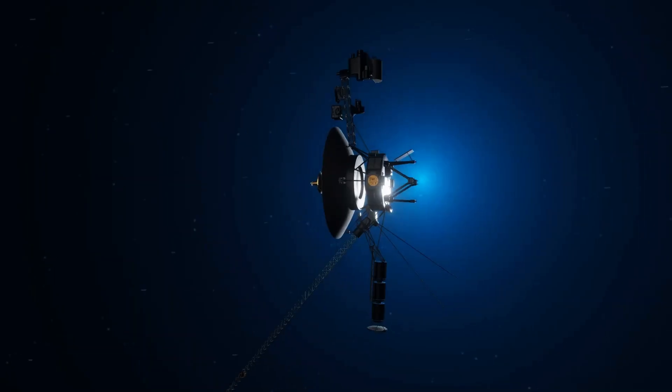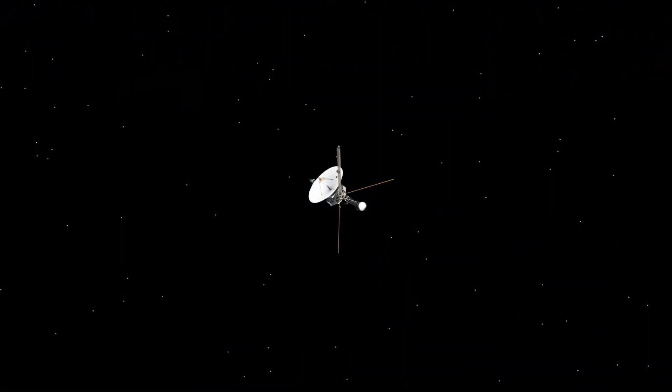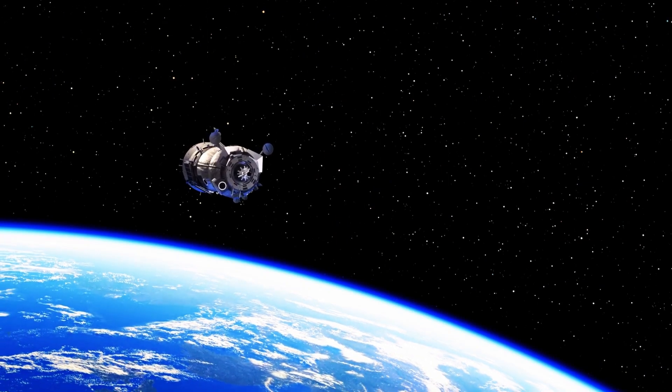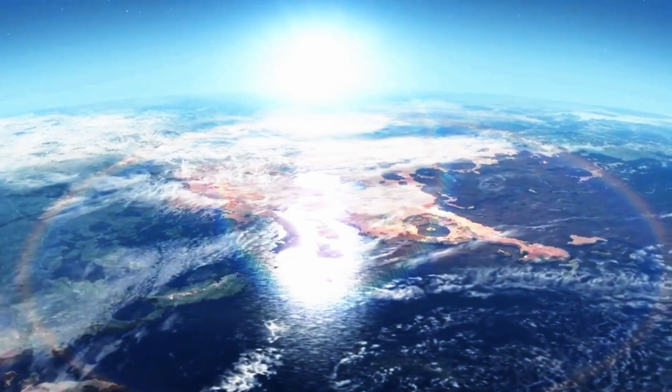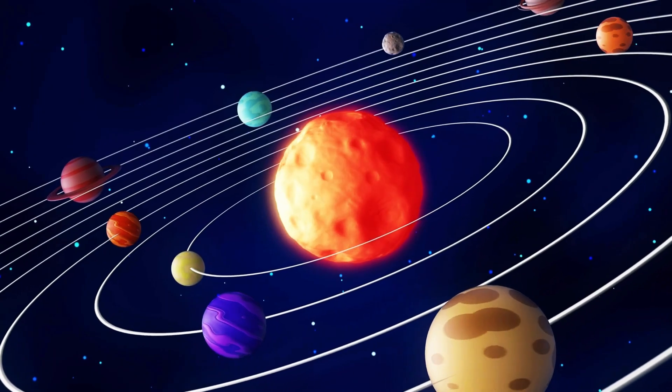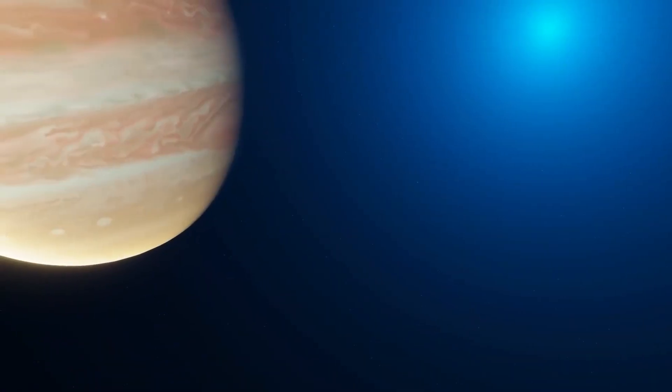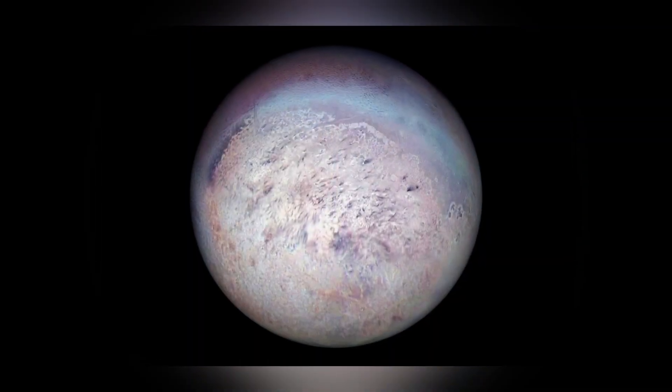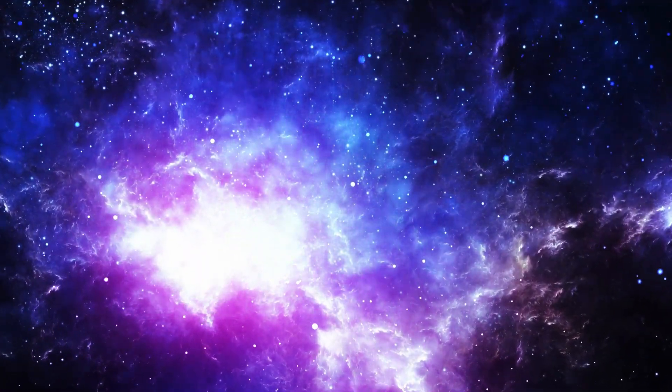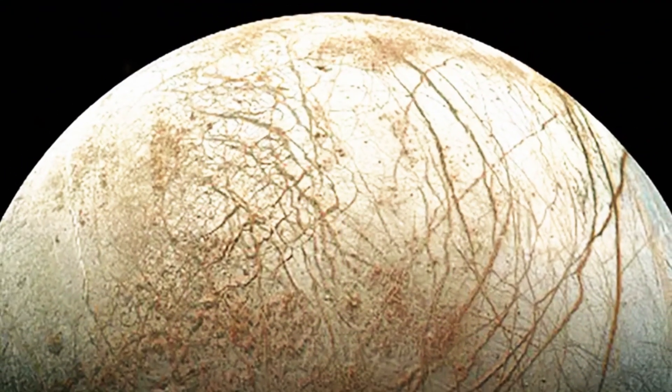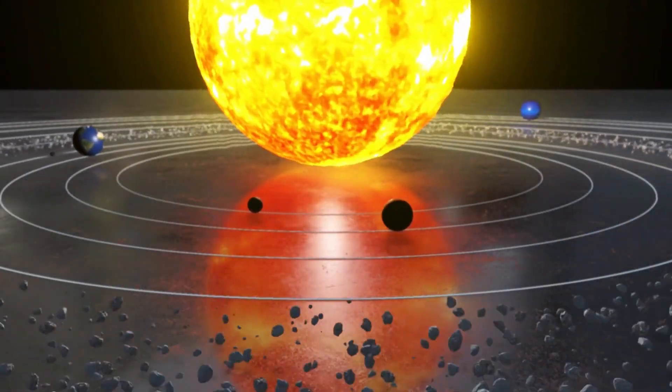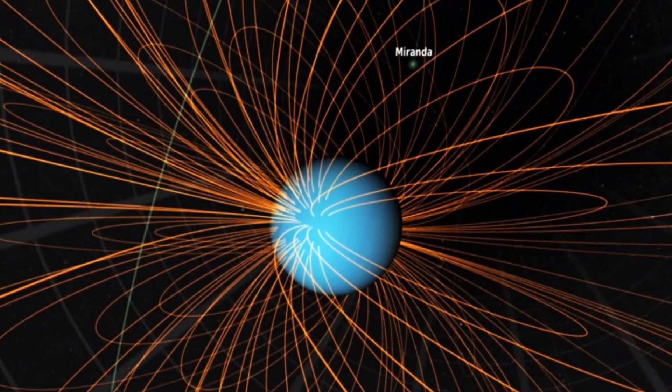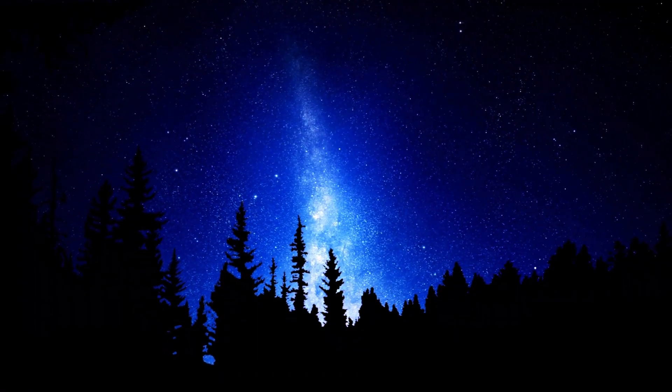In 1989, Voyager 2 reached Neptune, the last planet in its grand tour. It became the first and only spacecraft to visit the ice giant, capturing breathtaking images of its deep blue atmosphere, swirling storms, and the fastest winds in the solar system, reaching speeds of 1,200 miles per hour. The spacecraft also studied Triton, Neptune's largest moon, revealing an alien landscape of nitrogen ice and active geysers ejecting material into space. These findings hinted at a subsurface ocean beneath Triton's icy crust, sparking questions about the potential for life in one of the coldest corners of the solar system. Voyager 2 also discovered Neptune's peculiar magnetic field, tilted and offset from its center, challenging existing models of planetary magnetism.